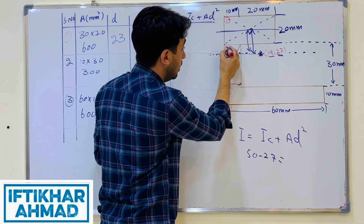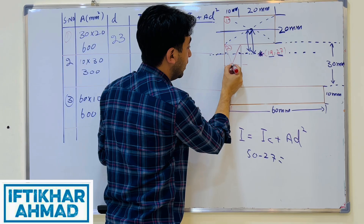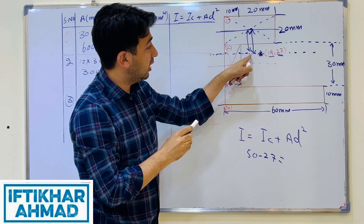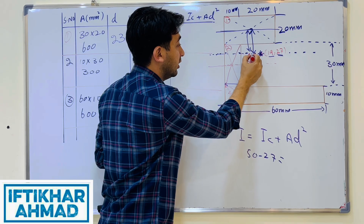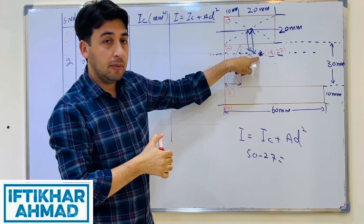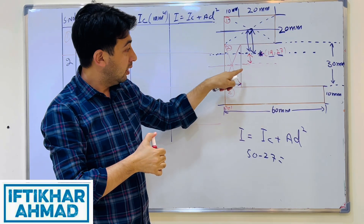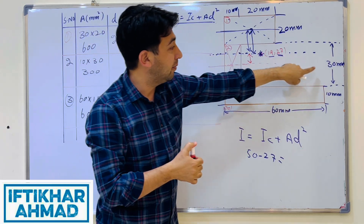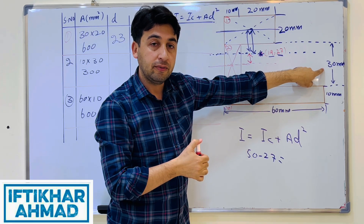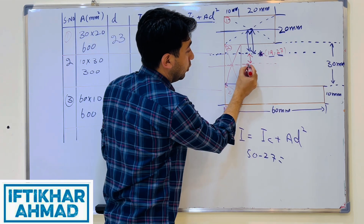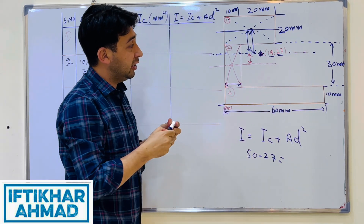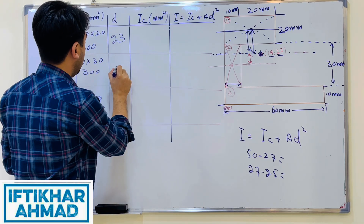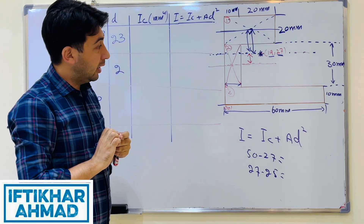For D2, the centroid of shape 2 (the middle rectangle) is located at 10 + 15 = 25 mm from the origin (since the height is 30 mm, half is 15). The composite centroidal axis is at 27 mm. So D2 = 27 − 25 = 2 mm.